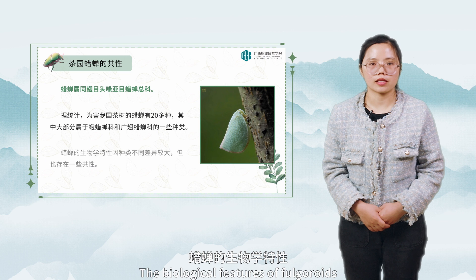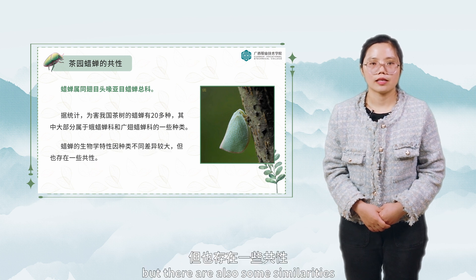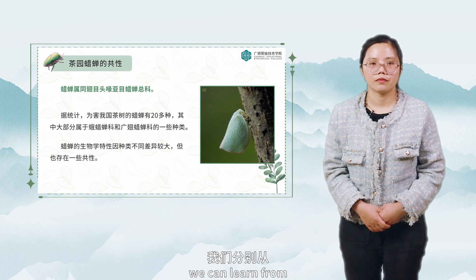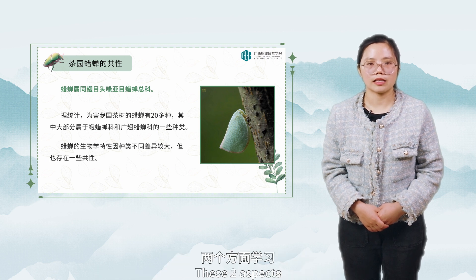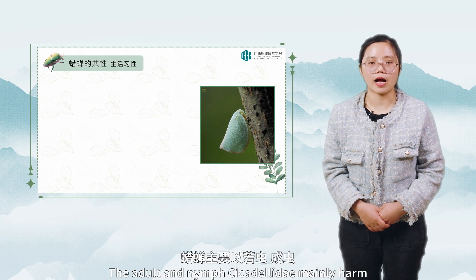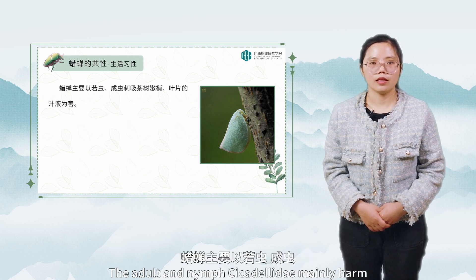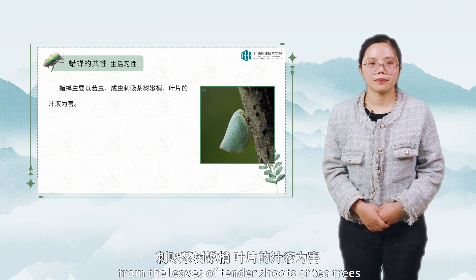The biological features of fulgoroids vary tremendously from kind to kind, but there are also some similarities we can learn from the living habits and occurrence regularity of cicada. First of all, let's learn from the common life habits of cicadilidae. The adult nymph cicadilidae mainly harm the tea trees by sucking the juice from the leaves of tender shoots of tea trees.